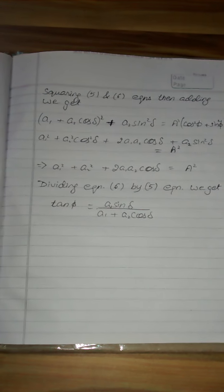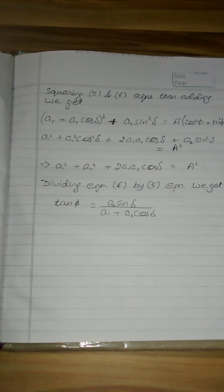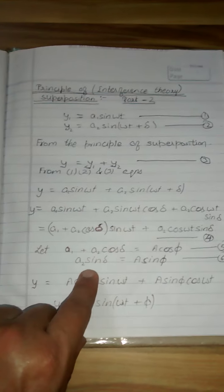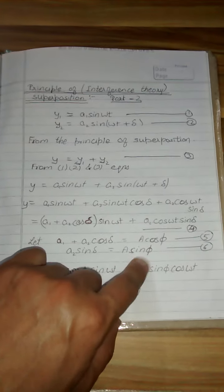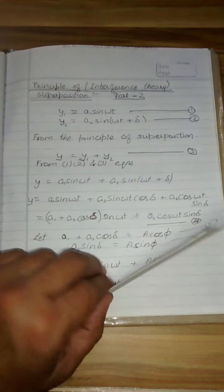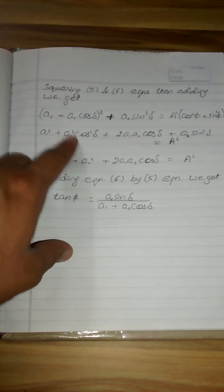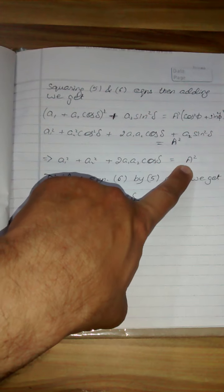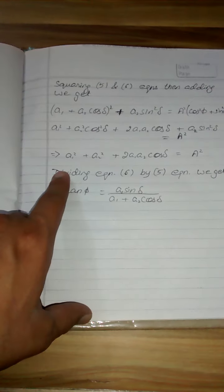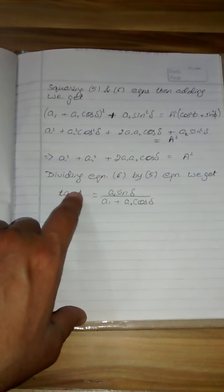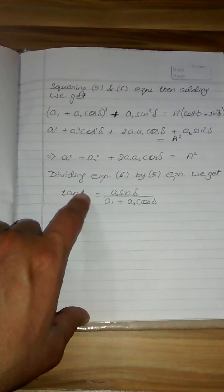We will take the squaring and adding of equation five and six. We square it and add them, so what we obtain is A squared, which is the intensity of the light obtaining at P.